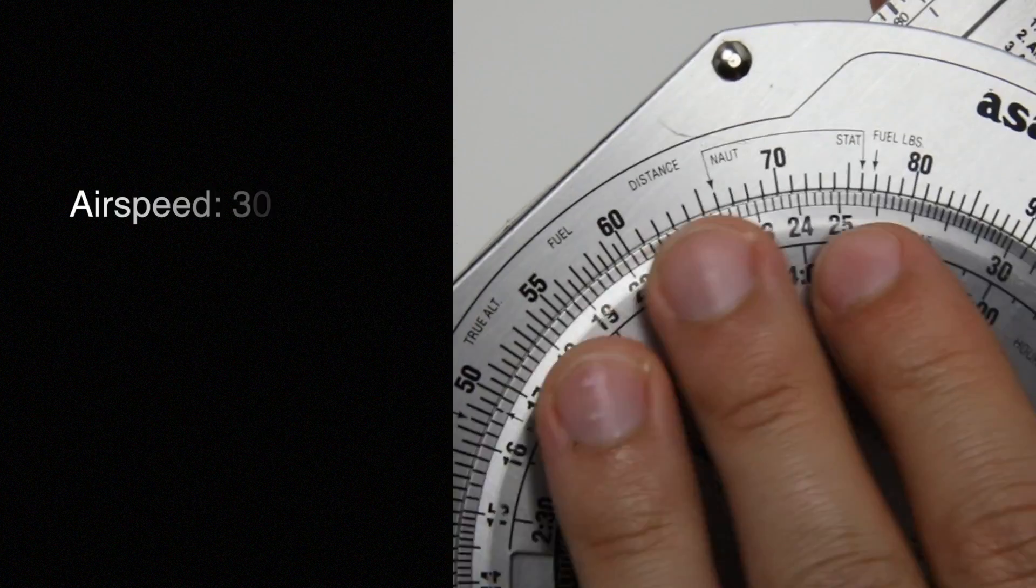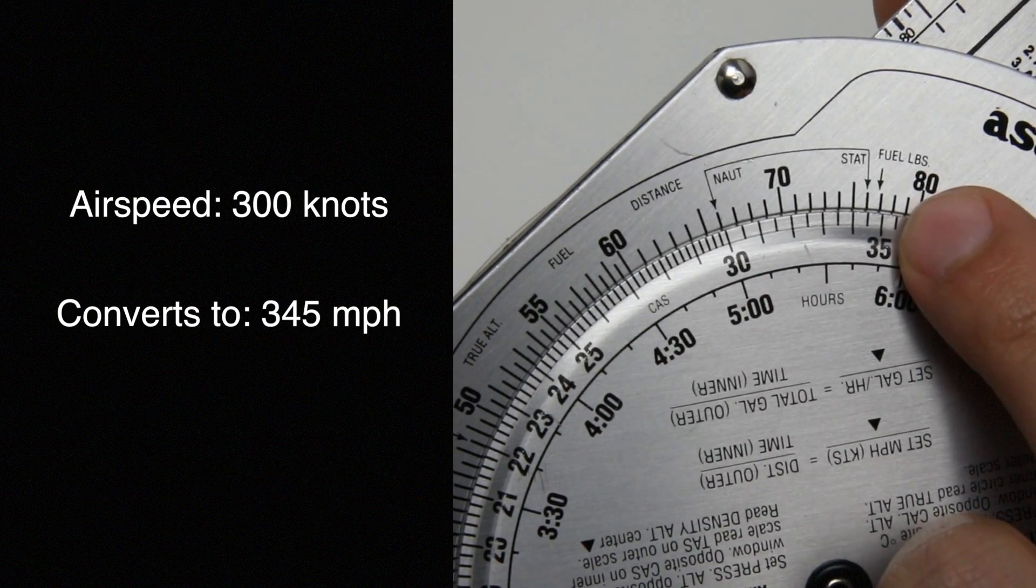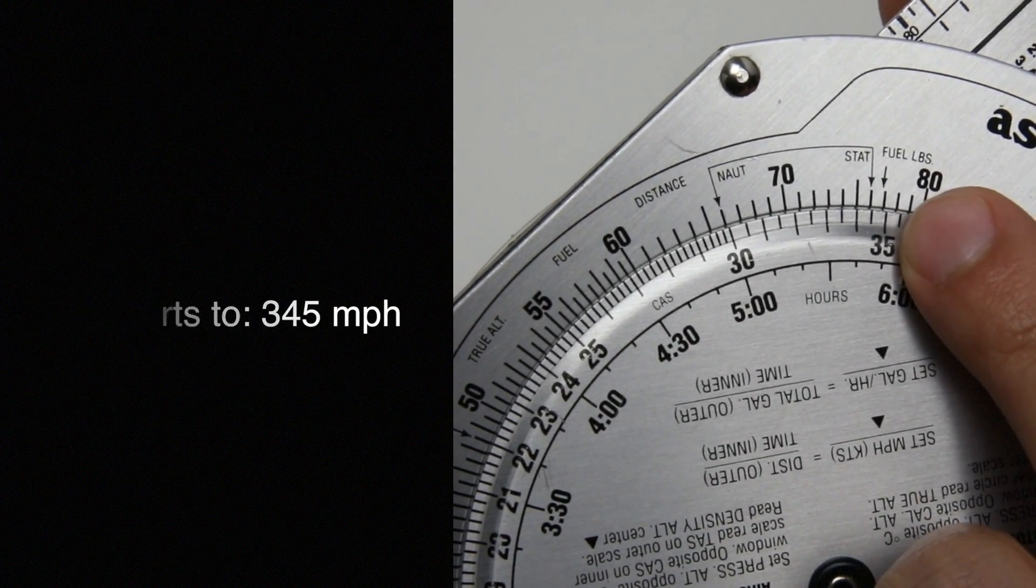300 knots is going to be about 345 miles per hour.